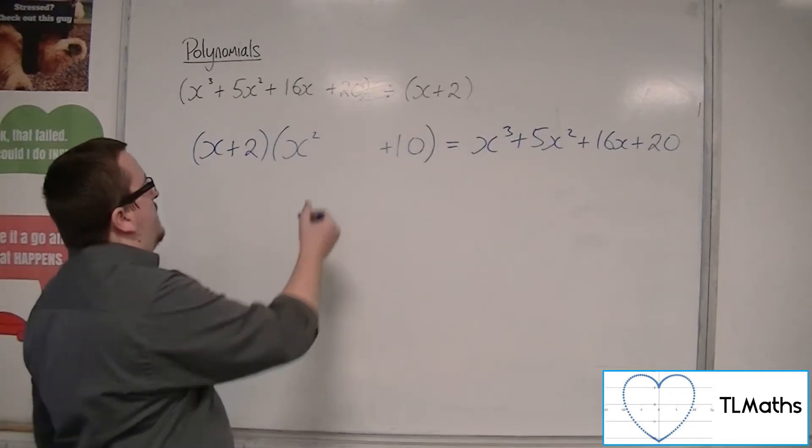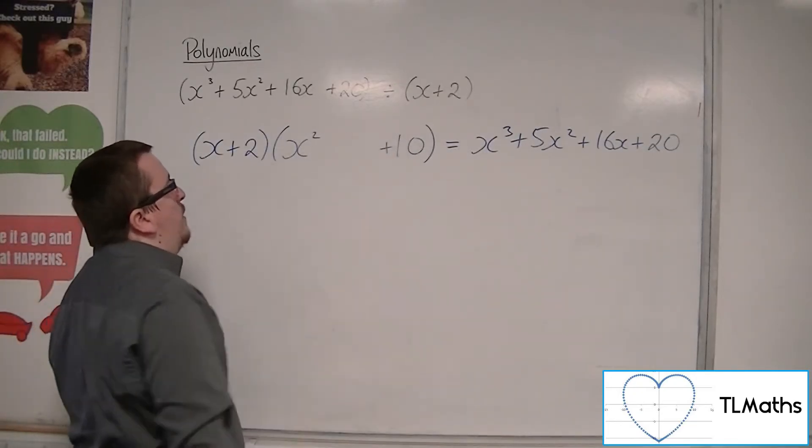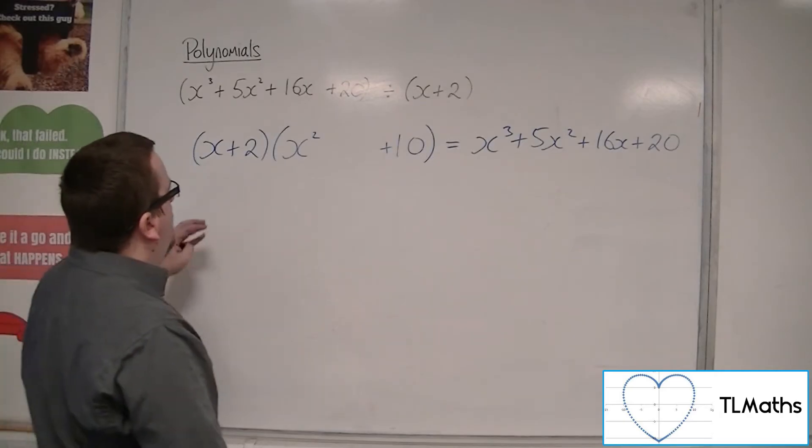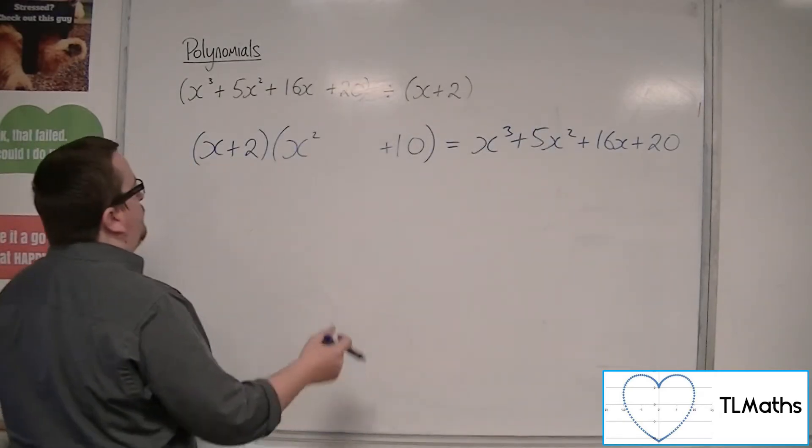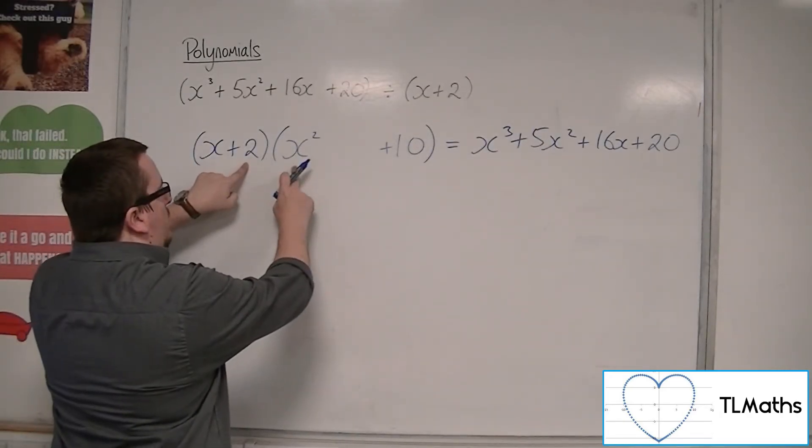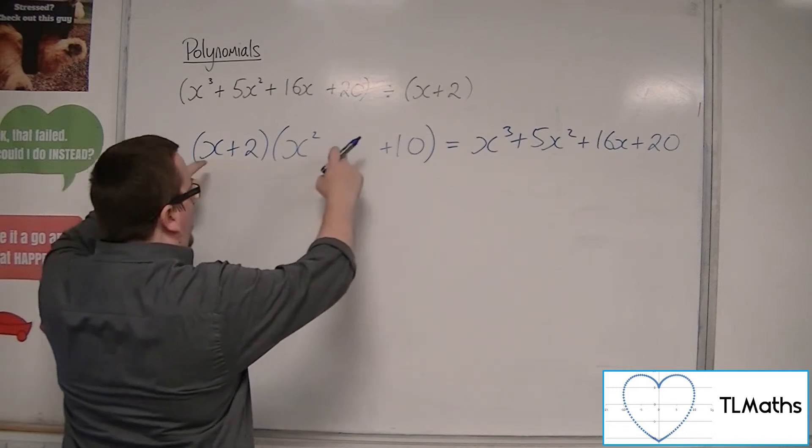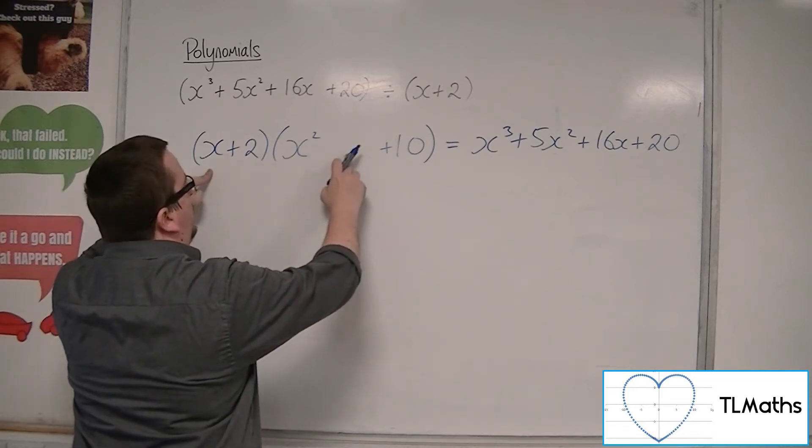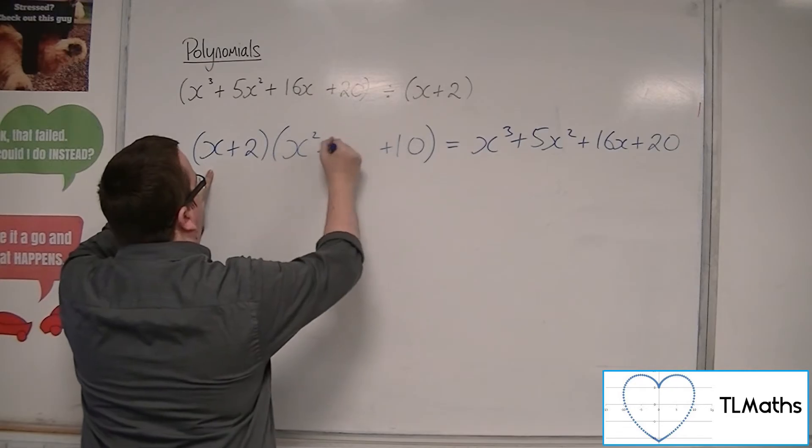So all I need to do is figure out what term should go there. Well, I must have 2x squared plus something will make 5x squared. So this would have to be 3x.